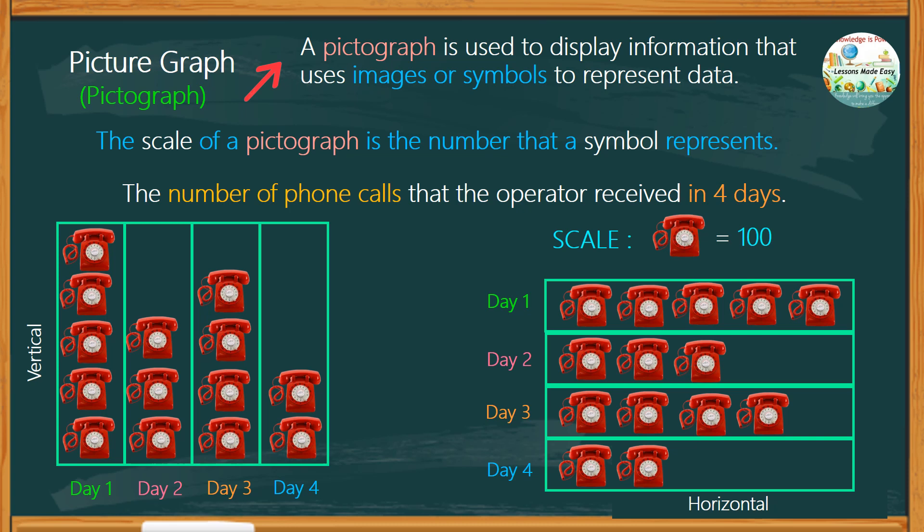It means on day 1, there were 500 calls were made, on day 2, 300, and 400 phone calls were made on day 3, while 200 phone calls on day 4. Looking at this information, we can conclude that day 1 has the most number of phone calls received, while day 4 has the least.